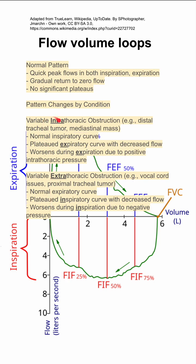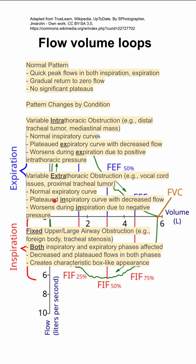This worsens during inspiration because of negative pressure. So it's kind of the reverse of what you'd expect: intrathoracic obstructions cause expiratory deficits and expiratory plateaus, whereas extrathoracic obstructions cause inspiratory plateaus. If you have a fixed upper or large airway obstruction — like a foreign body or tracheal stenosis — you'll have plateaus on both inspiratory and expiratory phases, with decreased plateaued flows in both.